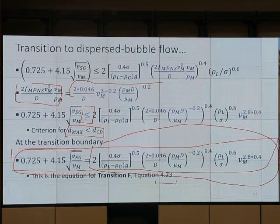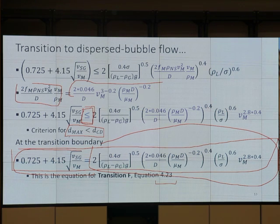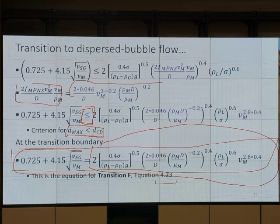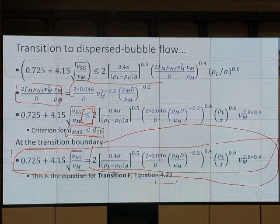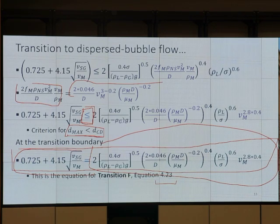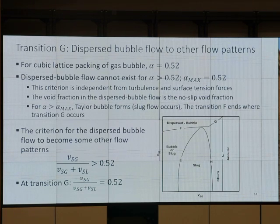So maybe put a note on that. Less than or equal will make that equation give d_max less than d_cd. And that's the case where we have this dispersed bubble flow. So where is it? This transition is transition F.